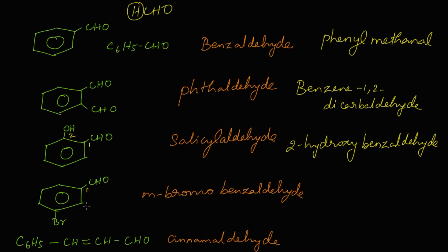For the fourth compound, numbering gives first, second, and third carbons; bromine is attached at the third carbon, so it is 3-bromobenzaldehyde. The IUPAC name of meta-bromobenzaldehyde is 3-bromobenzaldehyde — we simply replace 'meta' with the number 3.